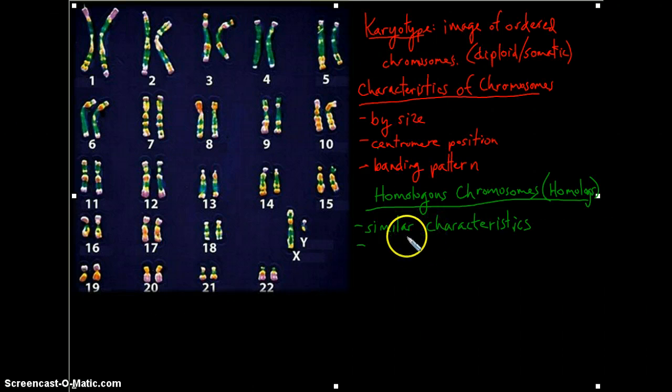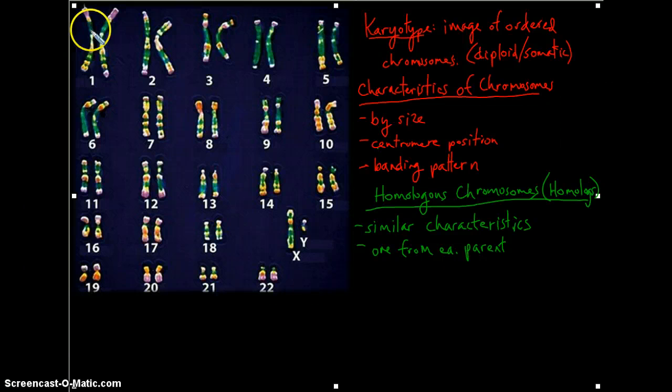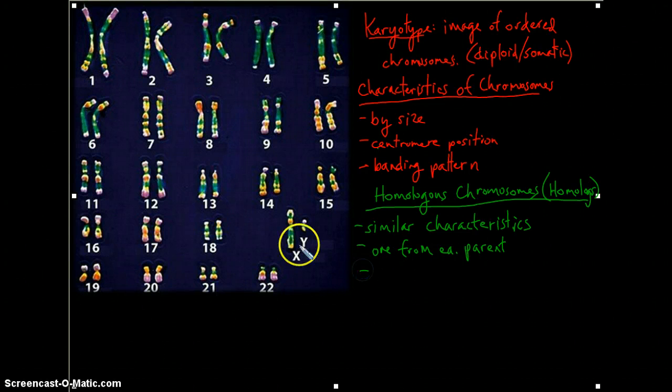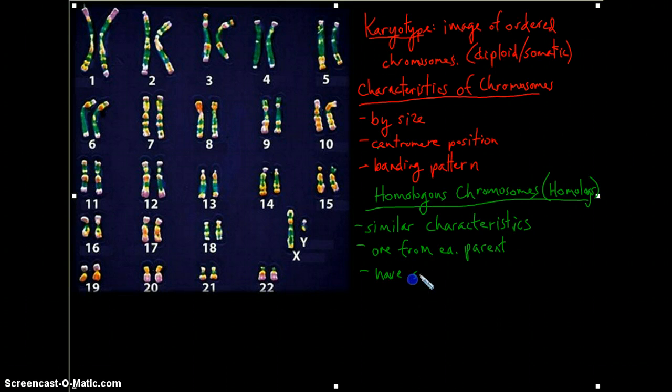They'll also have another characteristic—you get one from each parent. So when we look at this karyotype, one of these number one chromosomes came from the mother, one came from the biological father. An important note when looking at these chromosomes is that they will have the same genes for particular traits.